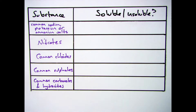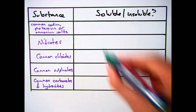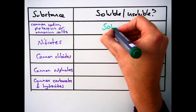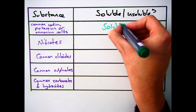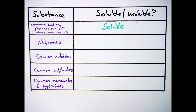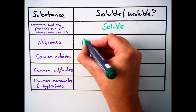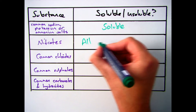So if we start off with the common sodium, potassium or ammonium salts, all of them are soluble. So anytime you have something like sodium chloride or potassium chloride, it is soluble.